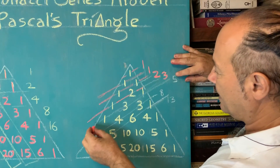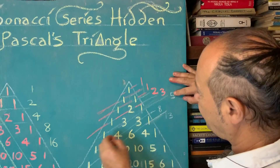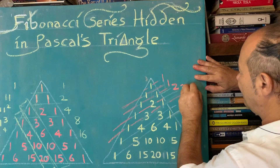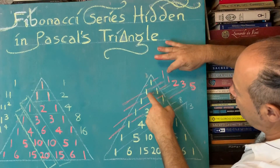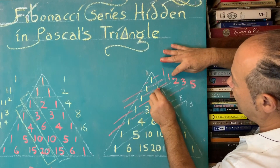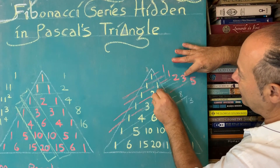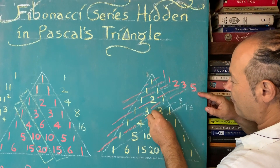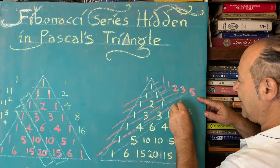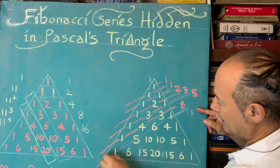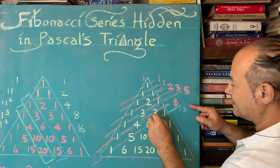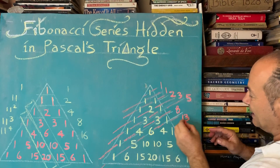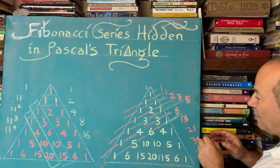We've got a one and a three and another one here making five. Let's check the numbers: one, one, then one and two gave us two, one and two gave us three, one and three and one gave us five. Then we've got one, four, and three in this diagonal giving us eight. And this diagonal: one, five, six and one gives us 13. This goes on infinitely - we can predict the next ones are 21, 34, on and on forever. So the Fibonacci sequence is hidden right inside Pascal's Triangle.